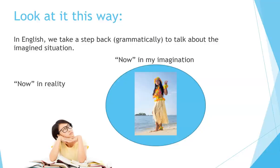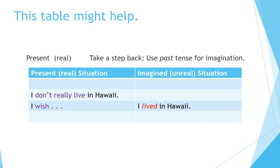Look at it this way. In English, we take a step back grammatically to talk about the imagined situation. Now in reality. Now in my imagination — in Hawaii. This table might help. Present, real: take a step back. Use past tense for imagination or the unreal situation. Present real situation — imagined unreal situation. I don't really live in Hawaii. I wish I lived in Hawaii.